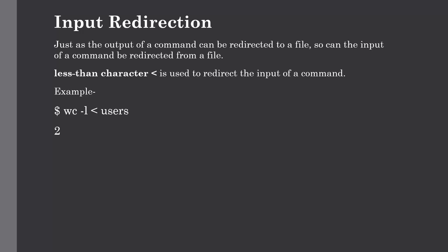Now let us discuss input redirection. As we have already seen, the output of a command can be redirected to a file. We can do the same for input redirection — the input of a command can be redirected from a file. This functionality is known as input redirection. Just as the greater-than symbol is used for output redirection, the less-than symbol is used for redirecting the input of a command. To count the number of lines, we use the word count command. By executing this command we can count the number of lines present in the users file. The users file has two items — apples and oranges — so the word count will be 2.